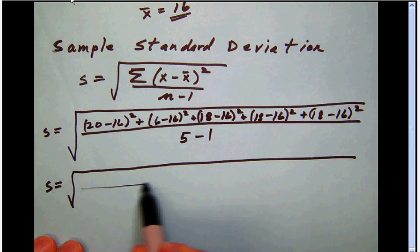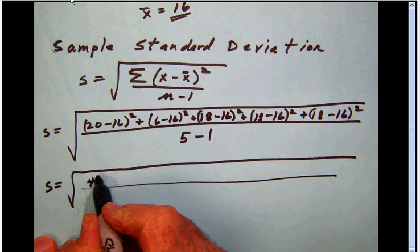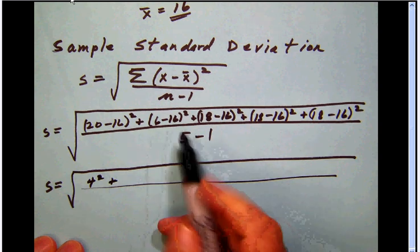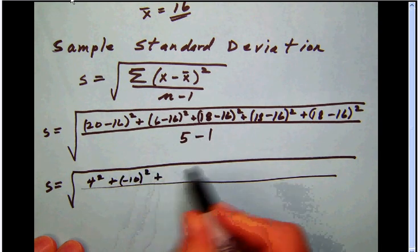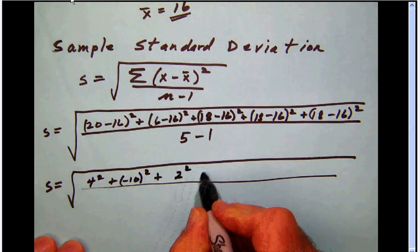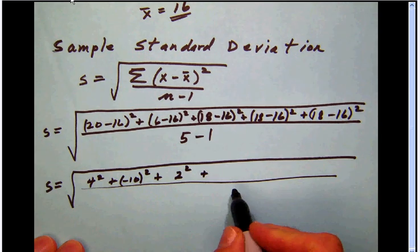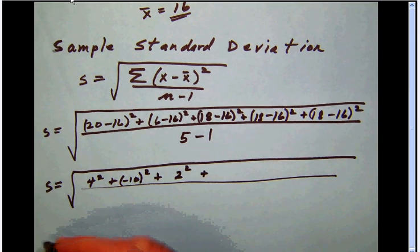Now what we'll do is write another step. 20 minus 16 is 4, which is going to be squared. 6 minus 16 is negative 10, which we're going to square. 18 minus 16 is 2, which we're going to square, and so on. Let's finish that out. And then as we begin the next step,